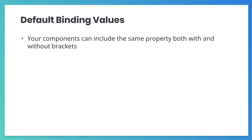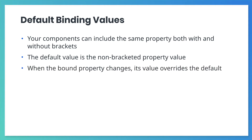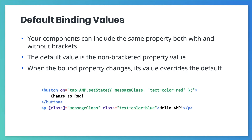To add a default value to a bound attribute, include the attribute twice — once where the name is surrounded with brackets and once without the brackets. The attribute that's not surrounded with brackets is the default value. When the binding is triggered by changes to relevant state variables, the default value is overridden. In the sample code shown here, the color of the text will be blue when the page first loads. Once the button is pressed, the messageClass state variable is updated, changing the value of the class attribute and changing the text to red.